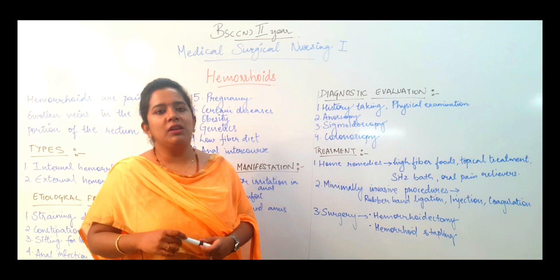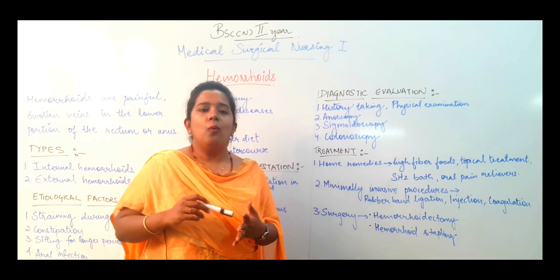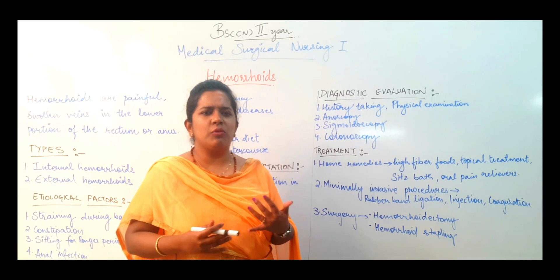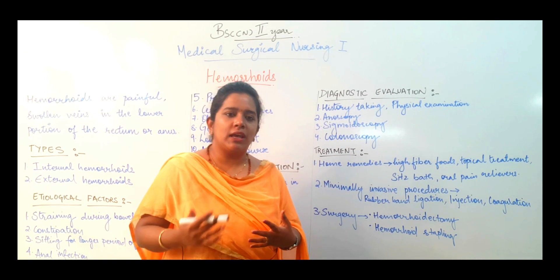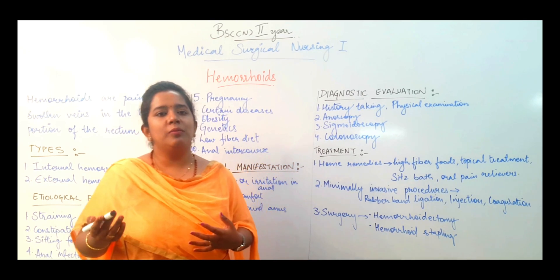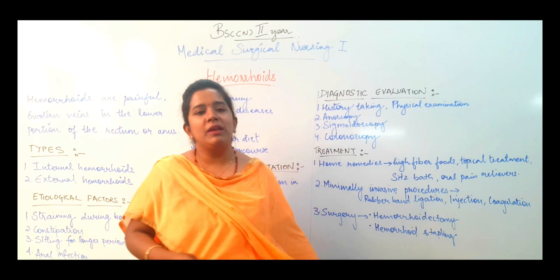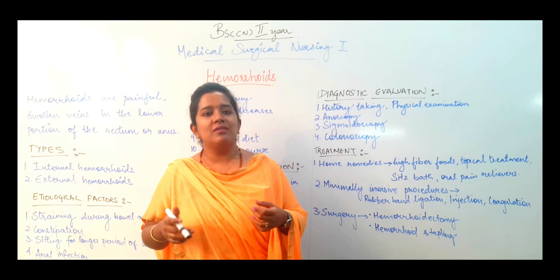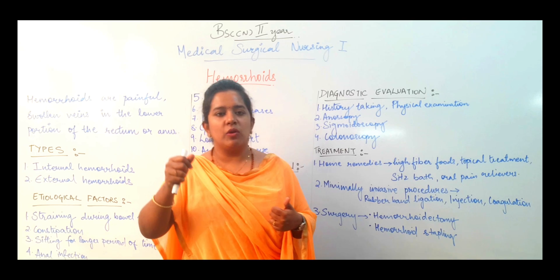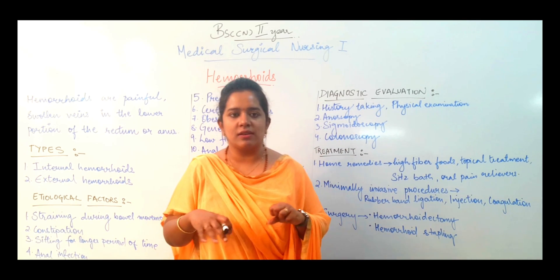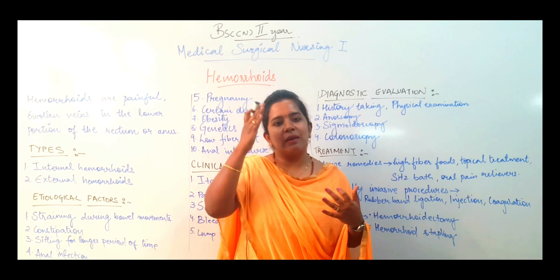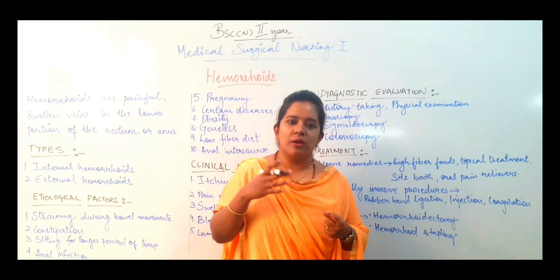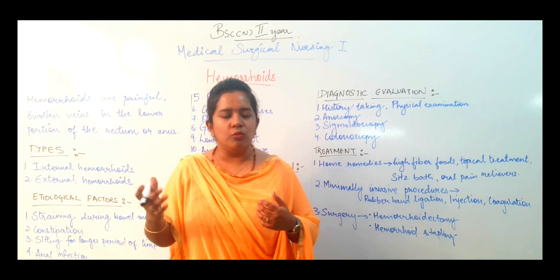The last option is surgery. There are two surgical ways to remove hemorrhoids. One is hemorrhoidectomy — removing the hemorrhoid directly — but there is a lot of pain and it takes time to heal. The other technique is hemorrhoid stapling, or stapled hemorrhoidopexy. This involves stapling the hemorrhoid, mainly used for internal hemorrhoids. The stapled area cuts off blood supply, so slowly the hemorrhoid shrinks and is resolved.